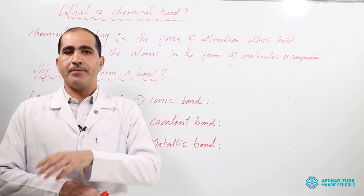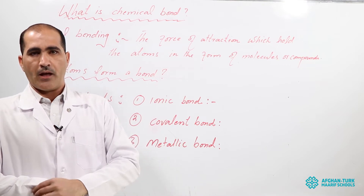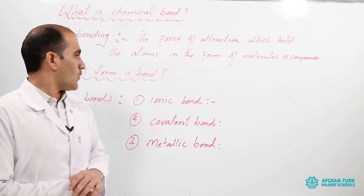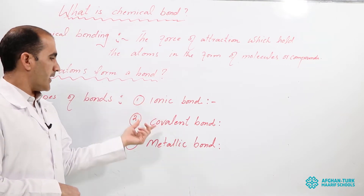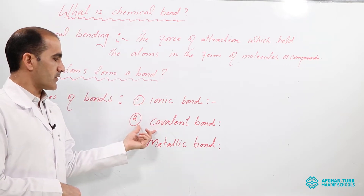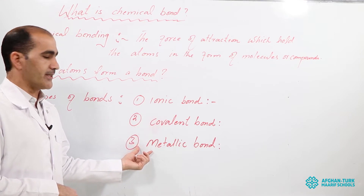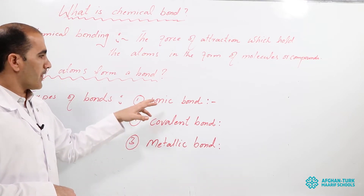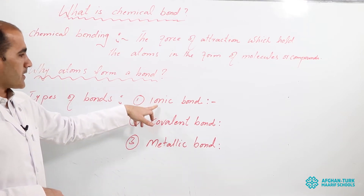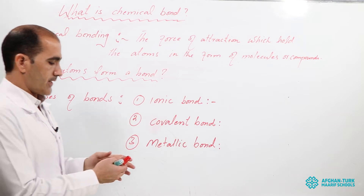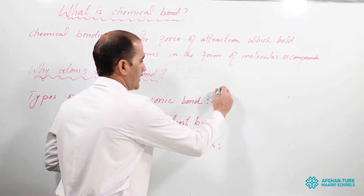There are three main types of chemical bonding. The first one is ionic bonds, the second one is covalent bonds, and the third one is metallic bonds. First, we will discuss about ionic bonds.